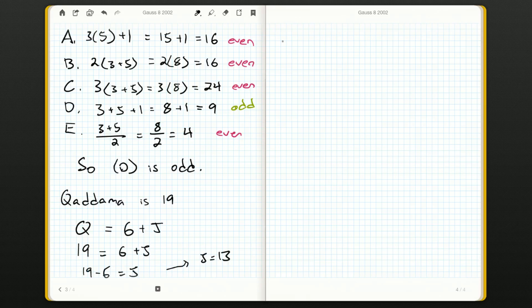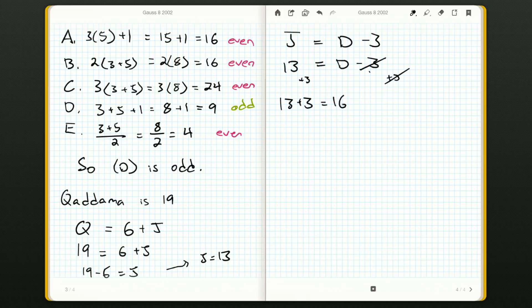Now, the other piece of information we have from the question is that Jack is 3 years younger than Doug. So, if we take Doug's age and take away 3 years, we should get Jack's age. Well, we know what Jack's age is. And now if we add 3 to both sides, we'll get 13 plus 3, which is 16, is Doug's age.